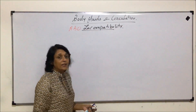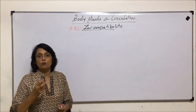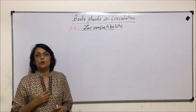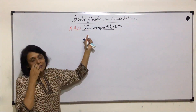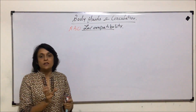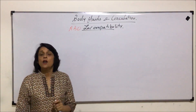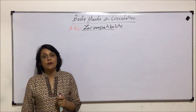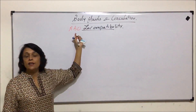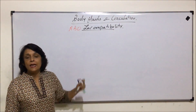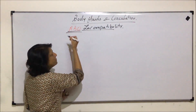Compatibility means when two things can work together. Incompatibility means if two things are together there would be some kind of complication or reaction, and here the incompatibility is related with blood groups.